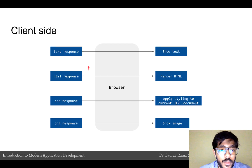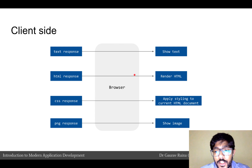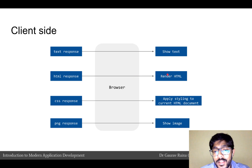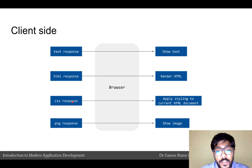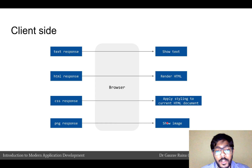The browser, in turn, when it got the response, interpreted the response in different ways. For example, for the text response, it just displayed the text. If the response from the server was an HTML response, it converted that HTML response into a visual rendering and rendered the HTML. Similarly, for a CSS response, the browser did not actually show the CSS but applied it to the current HTML document. And for the PNG response, it just showed the image.